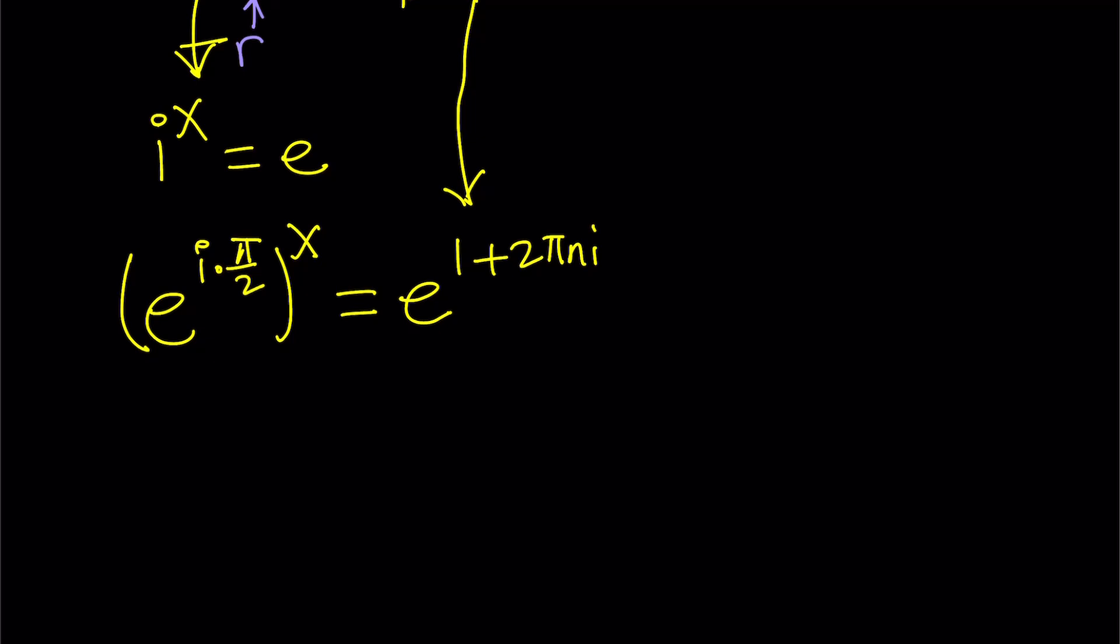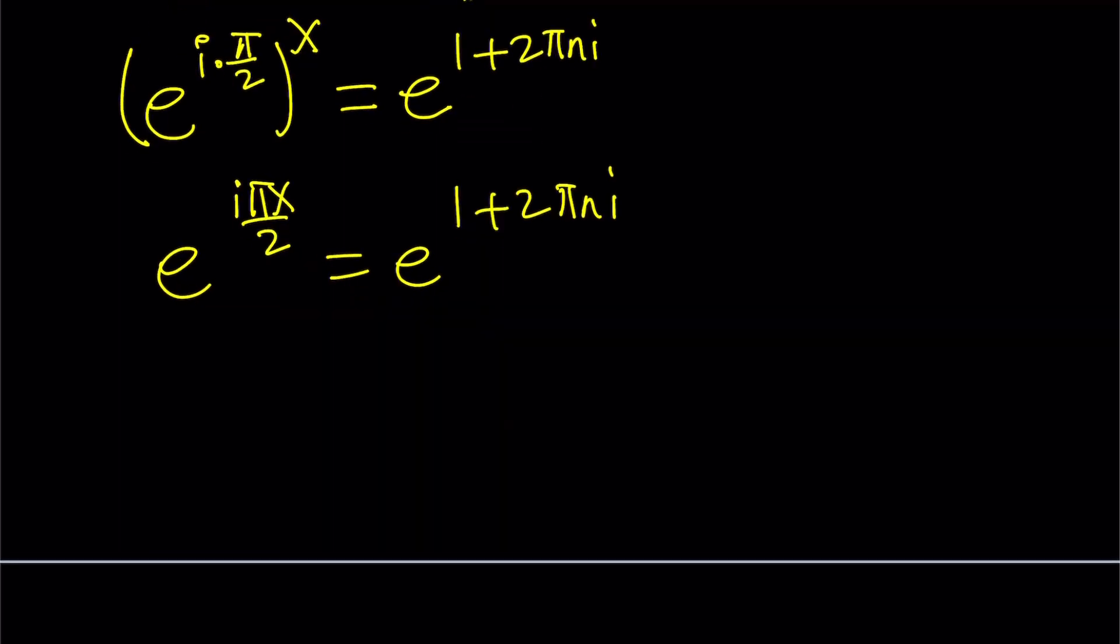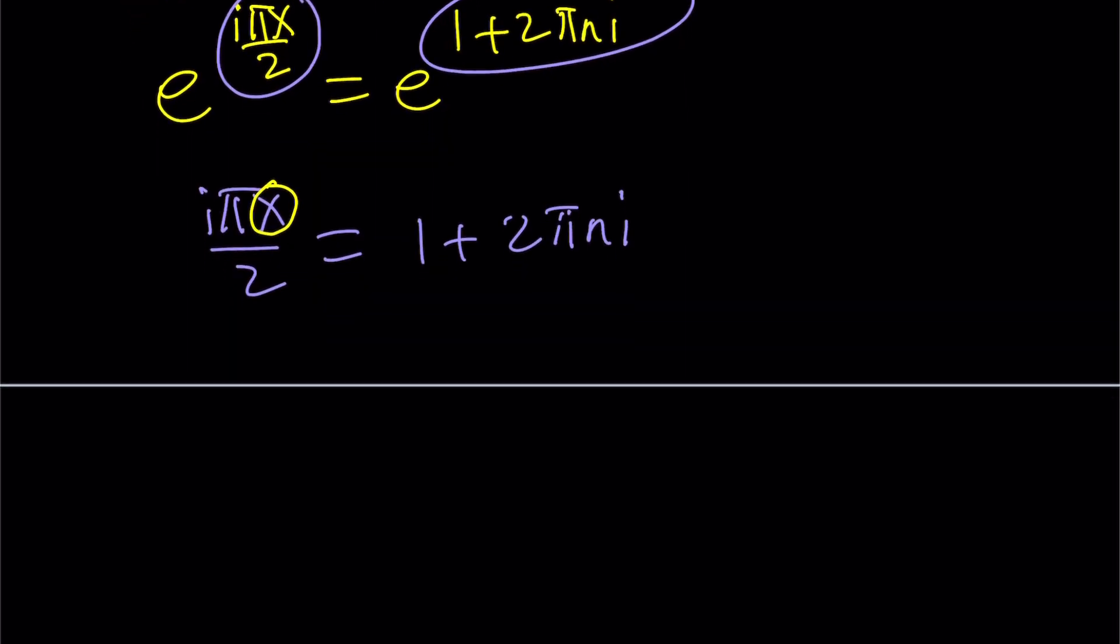So what do you do from here? You distribute the x. In other words, just multiply. So it's going to be i pi x over 2 equals e to the power 1 plus 2 pi n i. Great. We have the same base, so we can totally forget about them and just set them equal to each other. The exponents are equal, which means i pi x over 2 equals 1 plus 2 pi n i. Now, we're going to go ahead and multiply by something so that we can isolate x because our goal is to get the x by itself. So let's multiply both sides by the reciprocal of i pi over 2, which is 2 over i pi.